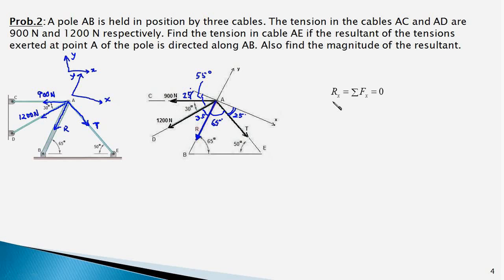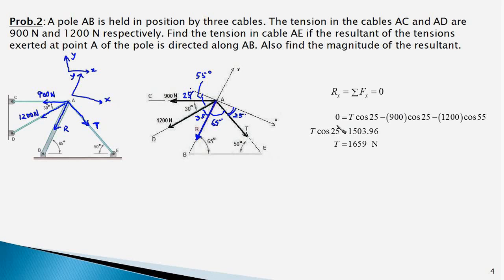Since R is along the y-axis, its component along the x-axis is 0. Therefore, sigma Fx equals 0: T cos 45 degrees minus 900 cos 25 degrees minus 1200 cos 55 degrees equals 0. The 900 Newton component points toward minus x, and the 1200 Newton component also has a negative sign since the angle is 55 degrees. Simplifying this equation gives T equal to 1659 Newtons.